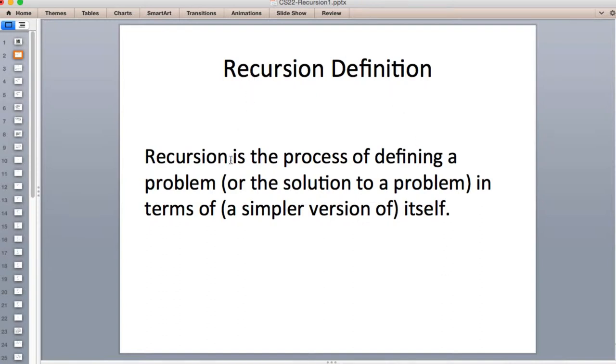So definition of recursion: it's a process of defining a problem in terms of itself. Basically you define a problem, or more exactly a solution of the problem, in terms of a simpler version of the same problem. If you can have some problem and imagine making that problem simpler, you basically have the same problem but in a smaller scale. You keep breaking it down so it's simpler, approaching the solution.